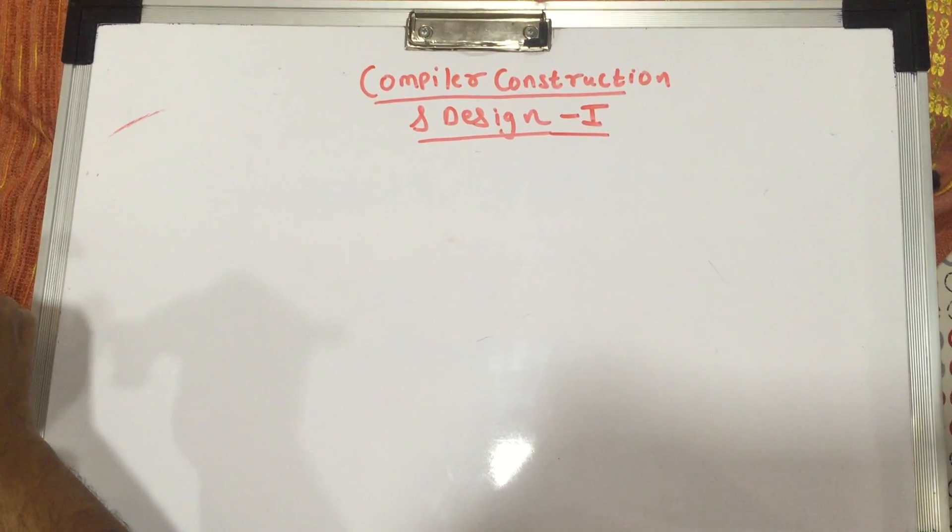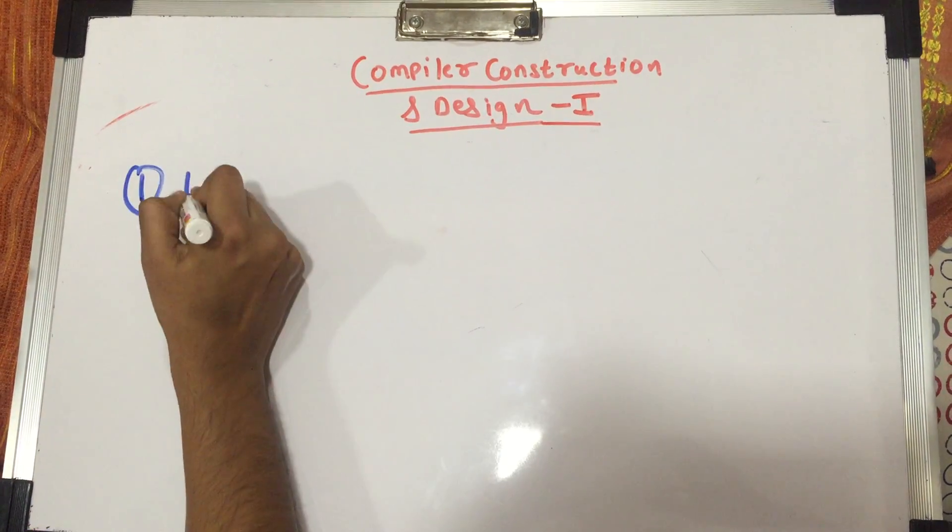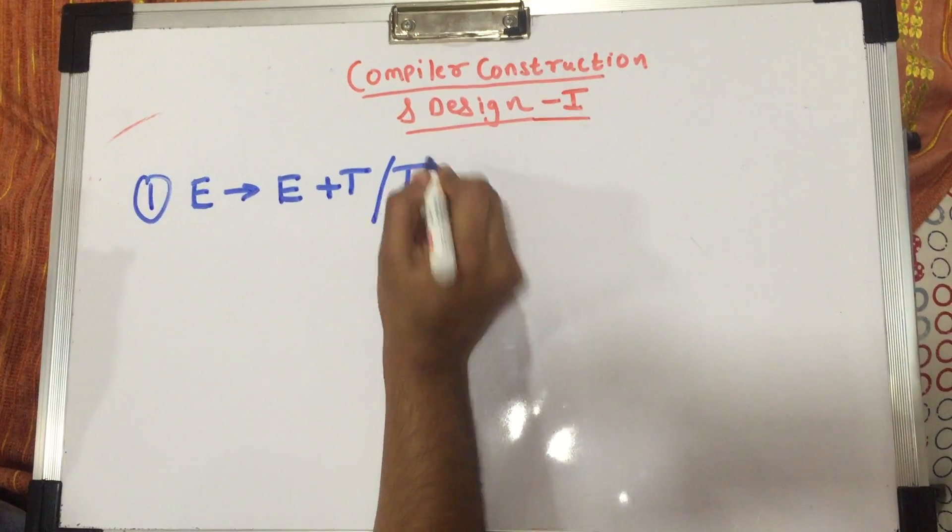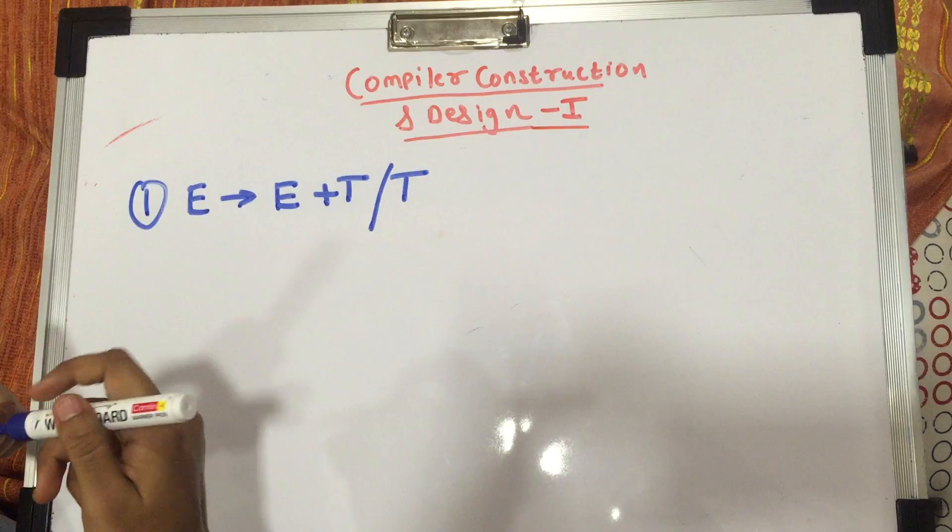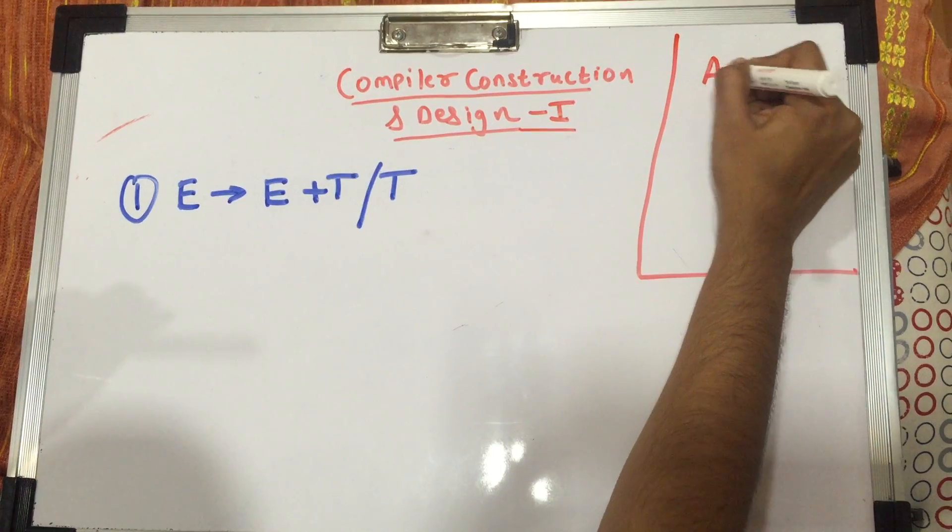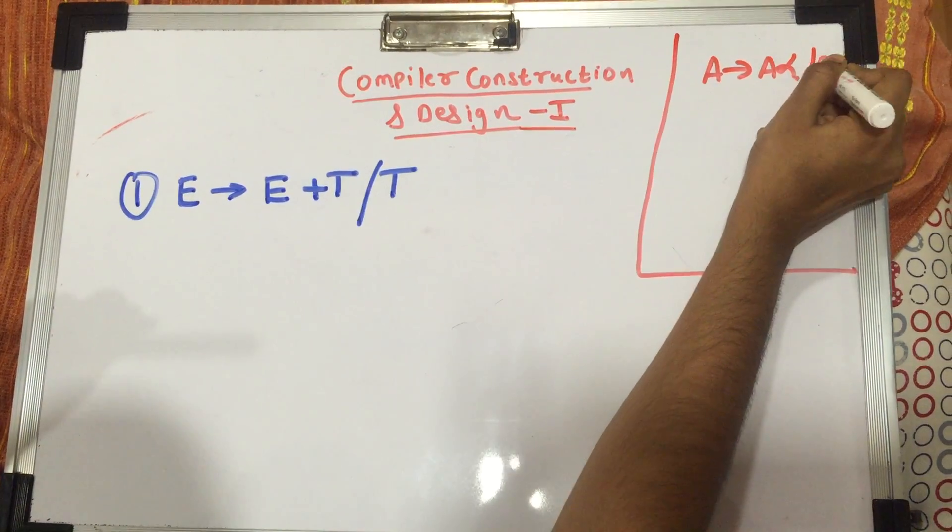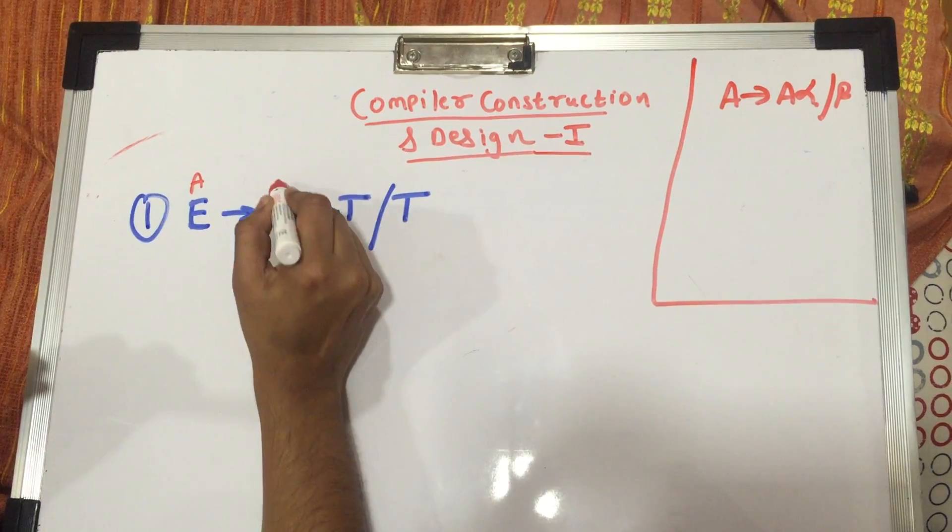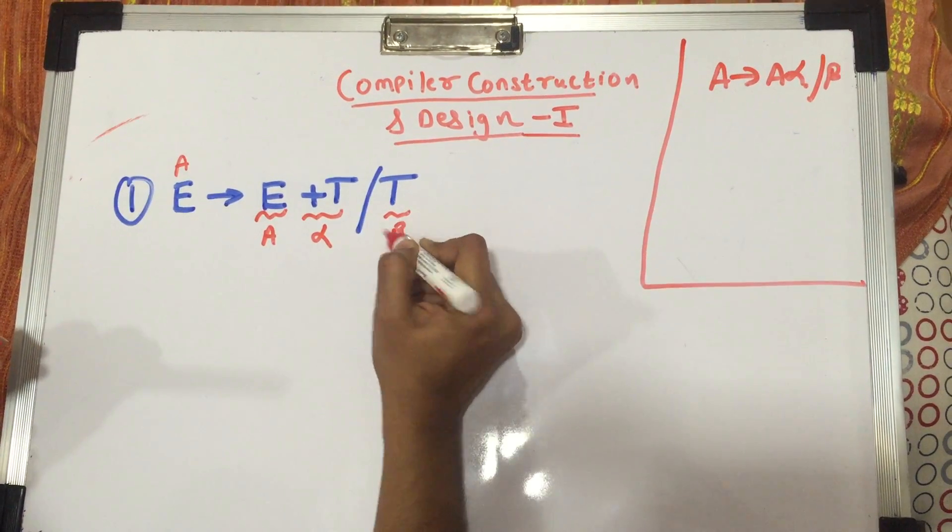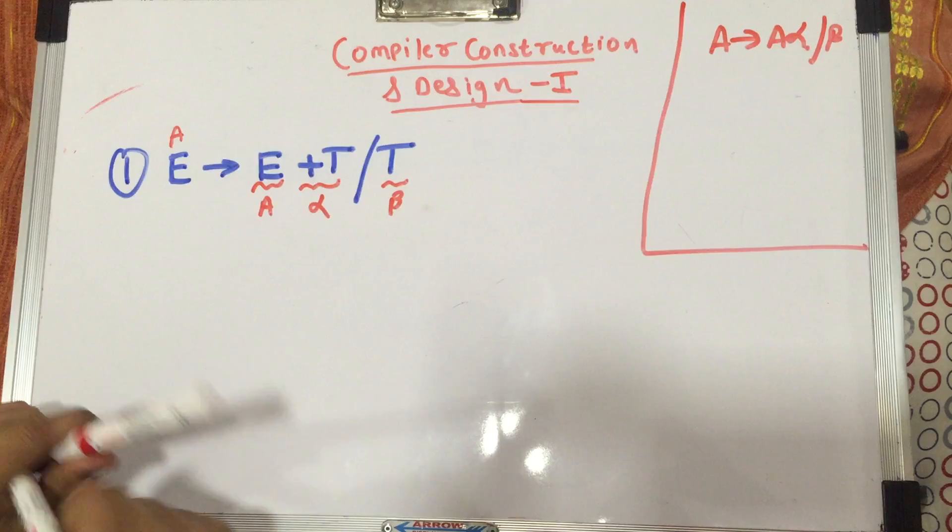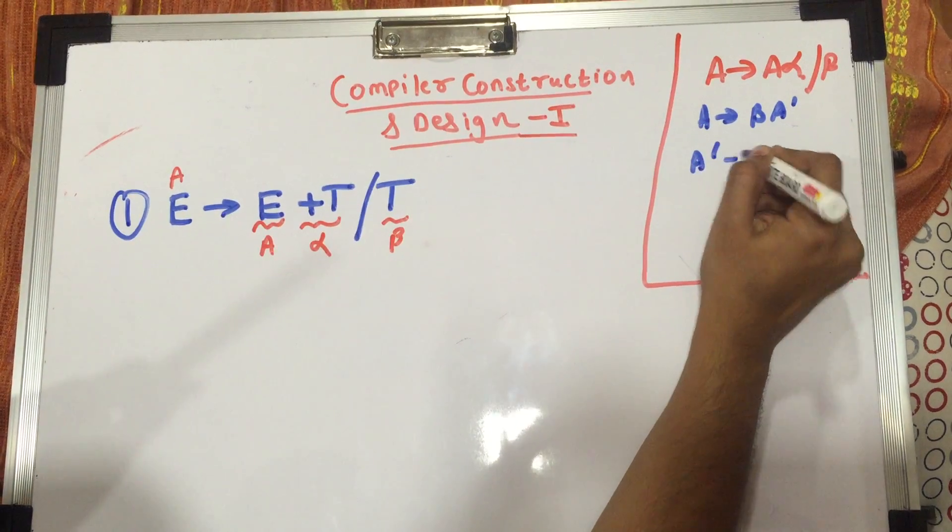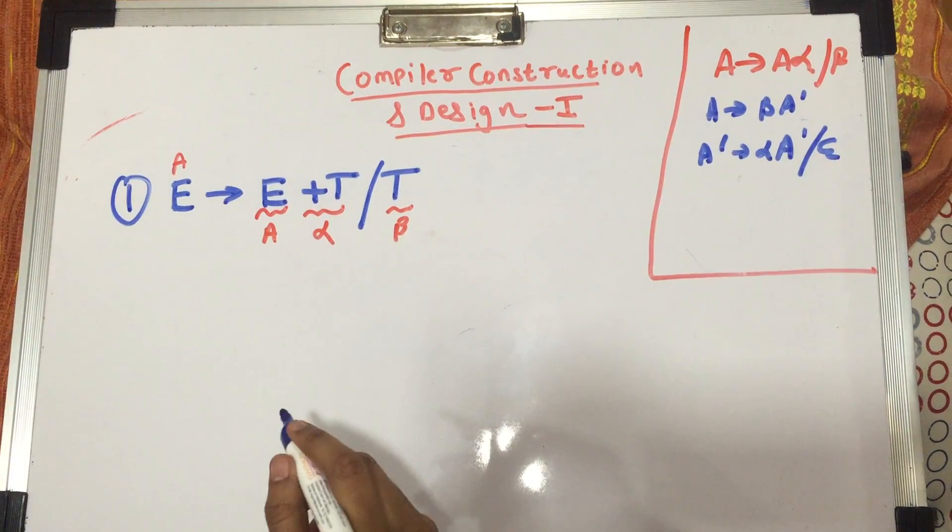So the first example is E gives you E plus T slash T. Now first step is to identify whether it is a left recursive grammar. So how to identify left recursive grammar? A gives you alpha A dash slash beta. So here as you can see, you have A, this part becomes A, this part becomes alpha and this is my beta. So what was the next rule? How do you eliminate it?